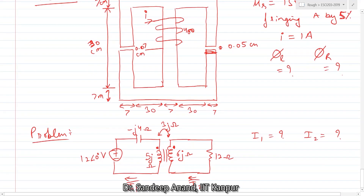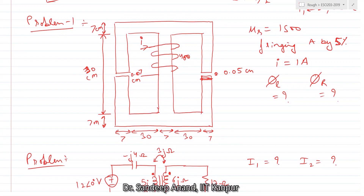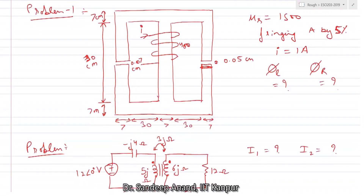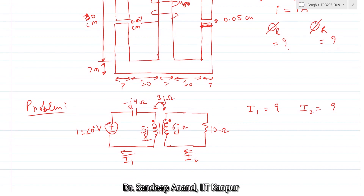We had two problems to solve. The first one was to find the flux flowing in the left leg and the right leg. For example, the height is 30 centimeters plus 7.5 from the top and 7 by 2 from the bottom, giving a total length of 37 centimeters. Subtract the air gap — it's very small so you can keep it as 37 centimeters — then convert to meters before solving. Nobody has tried this problem.